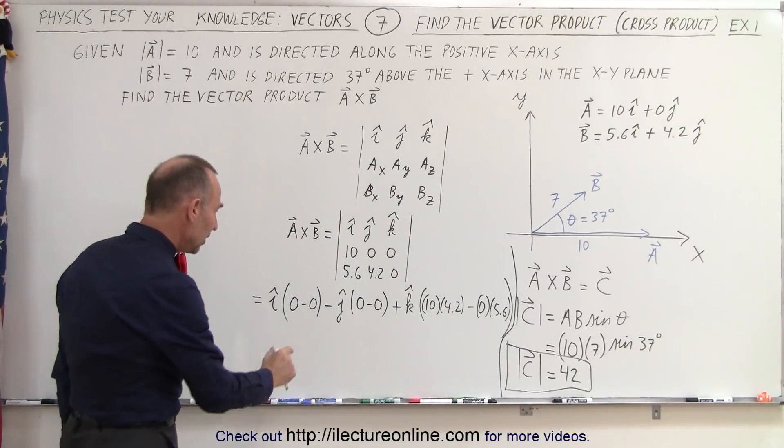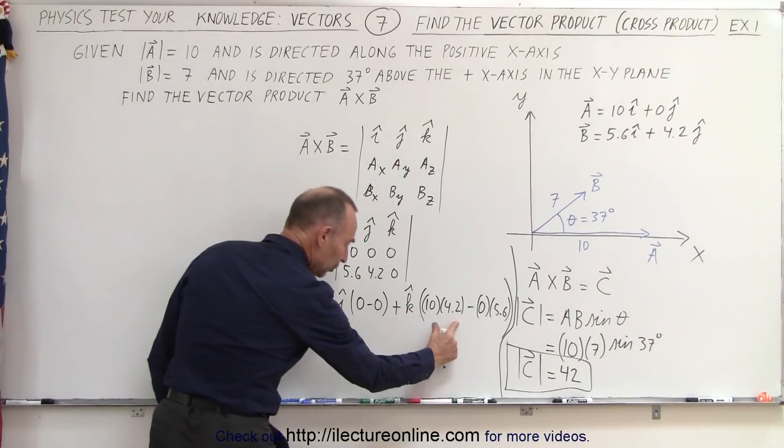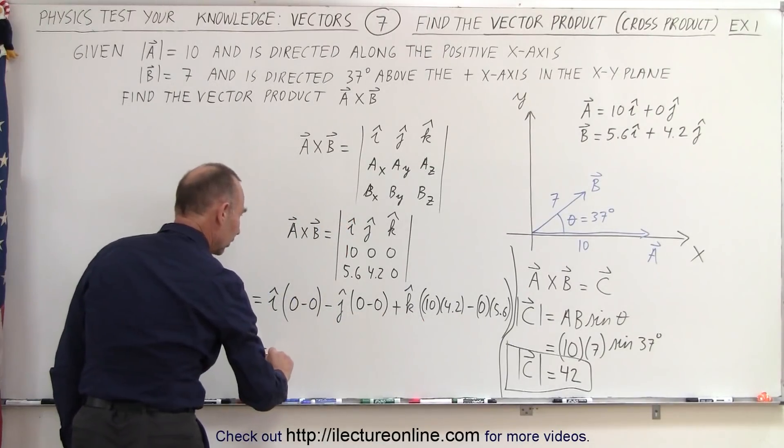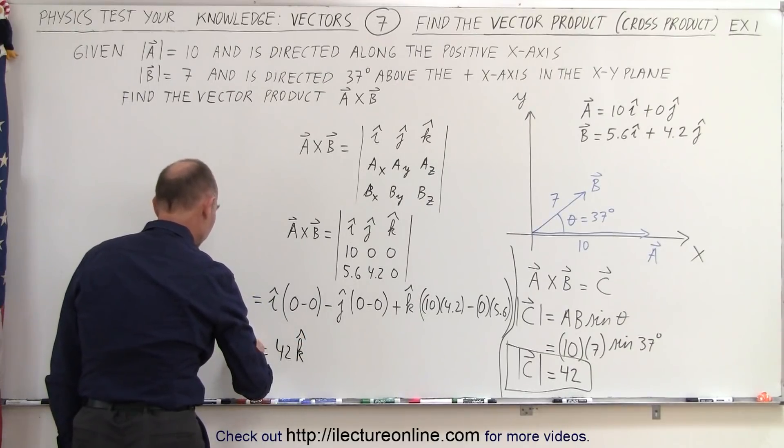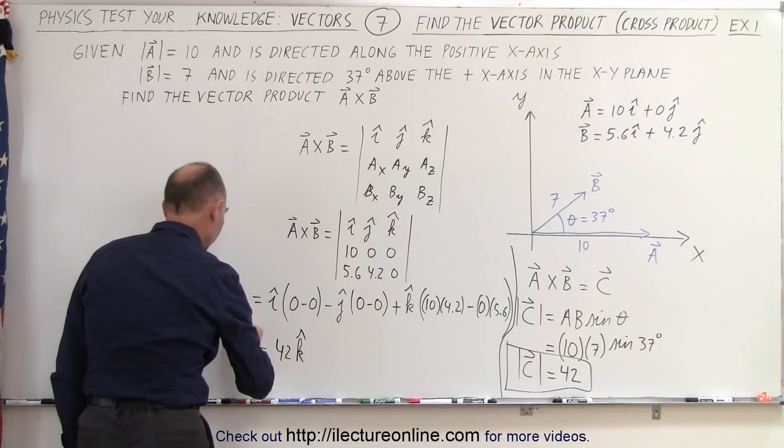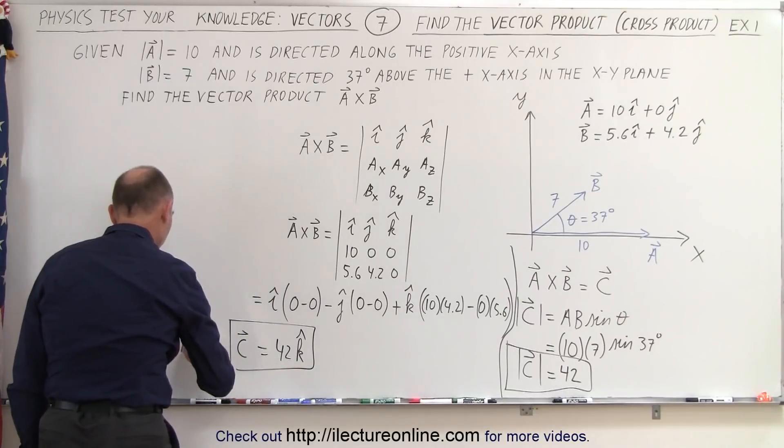Which means we don't have an I component, we don't have a J component, but we do have a K component. So this is equal to 42 in the Z direction. And so that would be the product C, which is A cross B.